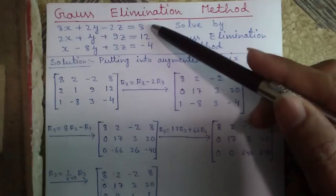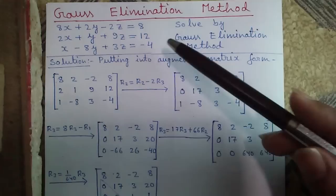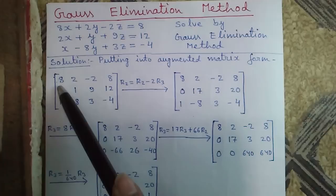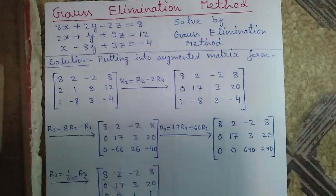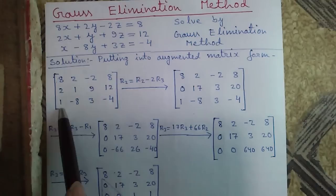Here a system of linear equations is given and will be solved by Gauss elimination method. First we will put the equations in augmented matrix. This is called the augmented matrix, and this 3x3 part is called the coefficient matrix because all the coefficients are written here, and this part is called the augmented part. Now we will apply elementary row operations — addition, subtraction, multiplication, and division — on the rows. This is row 1 or R1, this is R2, and this is R3.